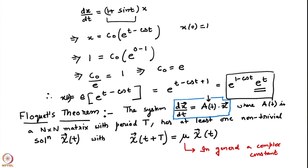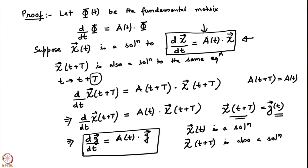We have started by looking at the proof of this theorem. For that, we introduced the notion of a fundamental matrix of a system, and then we showed that if χ(t) is a solution to this equation then χ(t+T) is also a solution. Recall that the definition of the fundamental matrix is: if we have n linearly independent solutions placed column-wise side by side in a matrix, that gives us the fundamental matrix of our system.